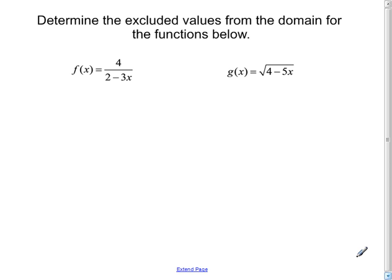This first one on the left is a rational function where we see it's got a variable in the denominator. Well, we know that from a basic number theory standpoint, the denominator can't be equal to zero. That would create a problem.